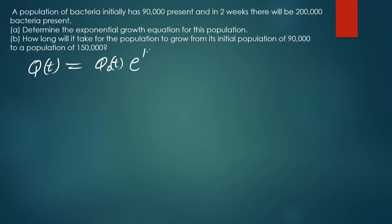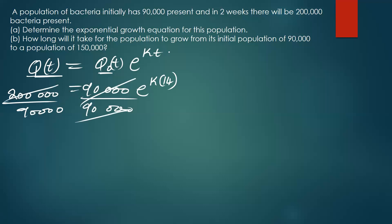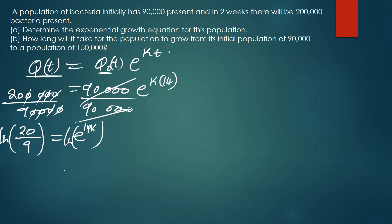So initially we had 90,000, and afterwards the population grew to 200,000. We have e to the power k, and the time is 14 days — two weeks. When we divide, the zeros cancel. For those not allowed to use a calculator, you divide and the zeros cancel, and you're going to remain with 20 over 9 on one side, and e to the power 14k on the other.